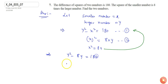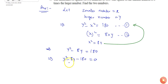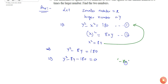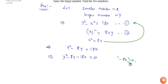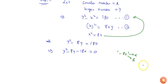So Y squared minus 8Y equals 180, or Y squared minus 8Y minus 180 equals 0. By solving this equation I can get the value of Y, which is the larger number. To solve this equation we need to split the middle term, minus 8Y, into two terms alpha and beta such that alpha plus beta equals minus 8Y.